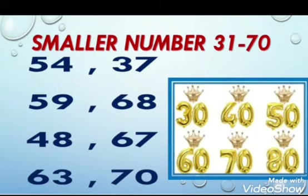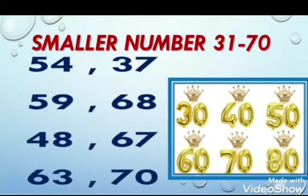Look at another example — which is the smaller number: 59 or 68? In the first number 59, 5 is tens and 9 is ones. In the second number 68, 6 is tens and 8 is ones. There are 5 tens in 50 and there are 6 tens in 60.